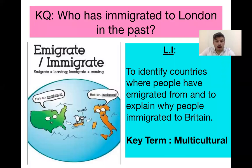Good morning Year 7 and welcome to another history class. Two days ago we started the new topic of immigration and migration, and in the previous class we looked at some reasons behind immigration — why do people move from country to country. We looked at the four reasons which were political, social, economic, and environmental.